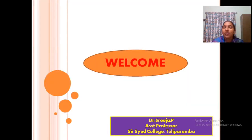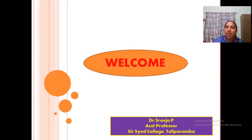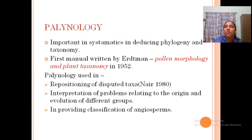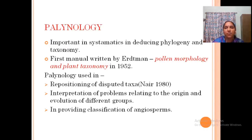In the last class we discussed taxonomic evidences like morphology, anatomy, and embryology. Now we are going to discuss the remaining part. The first one is palynology. Palynology is the study of pollen grains, and it plays a very important role in deducing phylogeny and taxonomy.